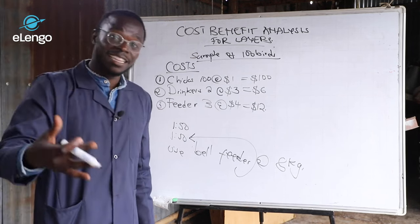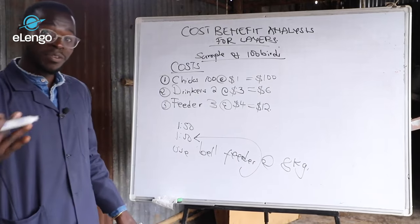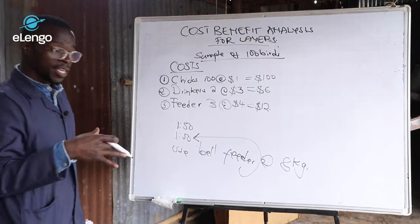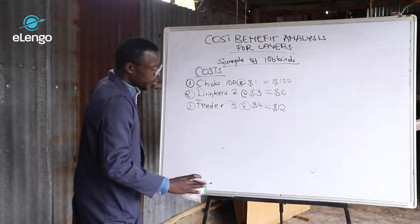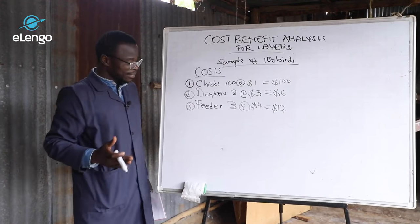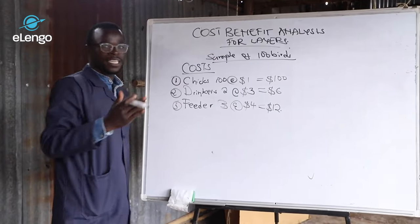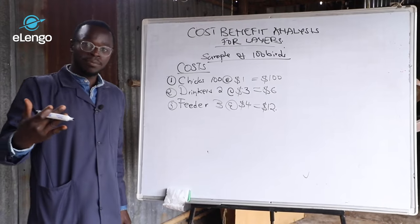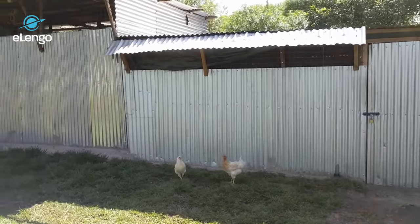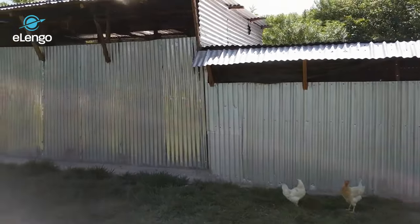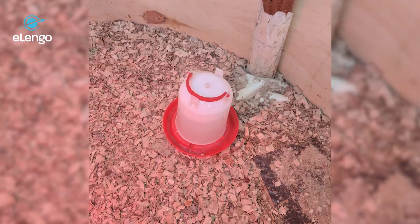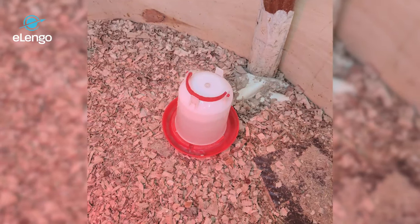These are costs that we shall not incur again in future. Once we buy them, we will use them for a season or two before we replace them. We have chicks, drinkers, and feeders. I assume you already have a chicken coop or structure which is ready or has the wood shavings. You will need labor — labor is you yourself, my student.